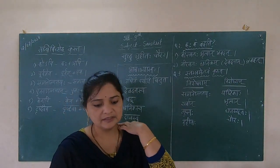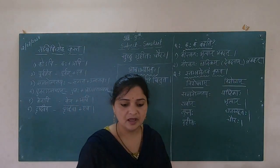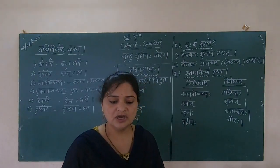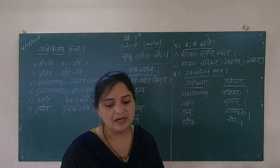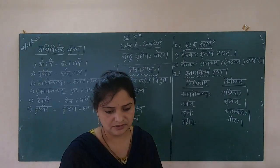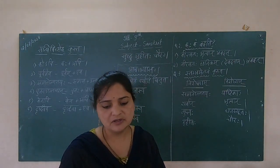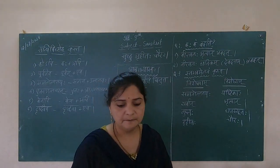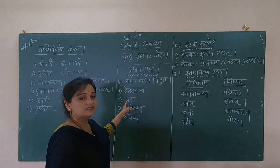Second question: Gruhe kati bhrutyaha asan — how many servants were in the house? Gruhe means house, kati means how many, bhrutyaha means servants, asan means were. Options: pancha, sabta, shad, eka. The answer is shad — there were six servants.